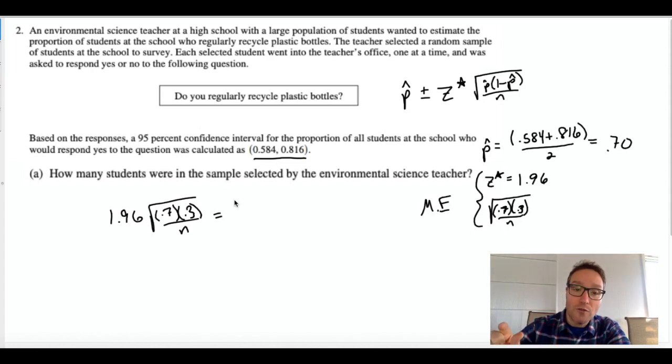So if you're given an interval and you want to find the margin of error, it's what they added and subtracted to the statistic. So what did they add and subtract to 0.70 to make this interval? So one way that works every time to get the margin of error is to subtract the upper minus the lower and divide that by 2. You'll get half the width of the interval because that was what was added and subtracted.